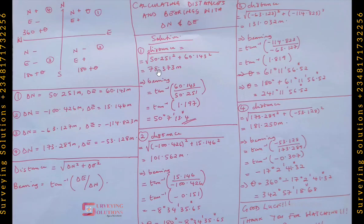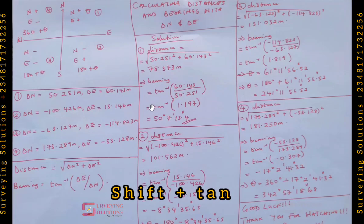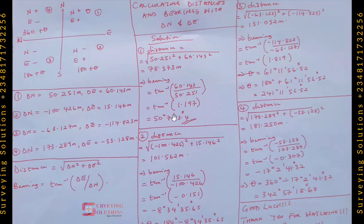Finding the sum of squares and taking the square root gives you 78.373 meters, rounded to three decimal places. For the bearing, tan inverse of 60.143 divided by 50.251 gives a quotient of 1.197. Then shift-tan of 1.197 gives 50 degrees 7 minutes 13.4 seconds — that is your bearing for quadrant one.